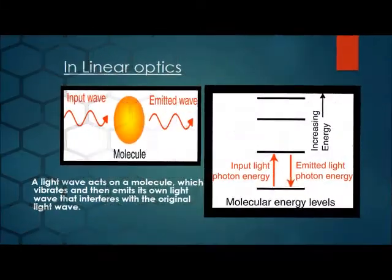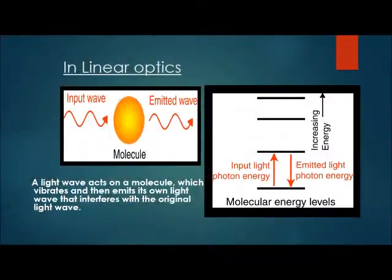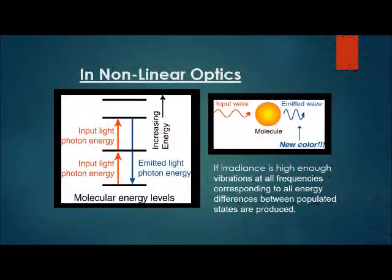In linear optics, a light wave acts on a molecule which vibrates and then emits its own light wave that interferes with the original light wave. In nonlinear optics, if irradiance is high enough, vibrations at all frequencies corresponding to all energy differences between populated states are produced.